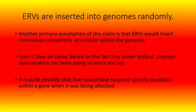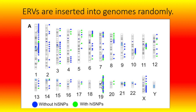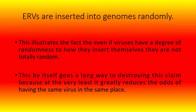Another primary assumption is that ERVs would insert themselves completely at random within the genome. Even if they do today, based on the fact that under biblical creation, deterioration has been going on since the fall, it is quite possible that they could have targeted specific locations within a gene when it was being attacked. Here is an example from the HIV virus. There are definite signs of clustering within the map of where it can be found inserted within the human genome, with multiple locations where the insertions are in the same location. This illustrates that even if viruses have a degree of randomness, they are not totally random, which greatly reduces the odds of having the same virus in the same place.